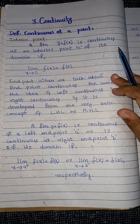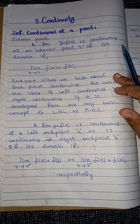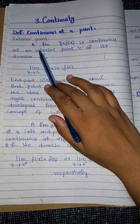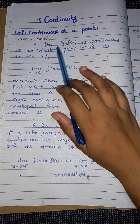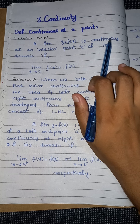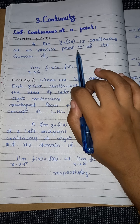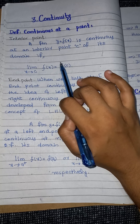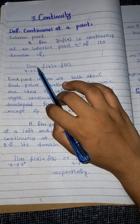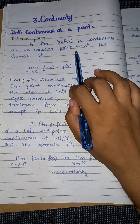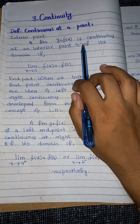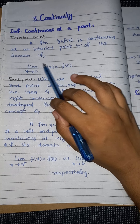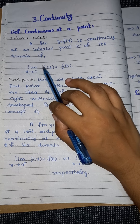In the case of an interior point, the definition says that a function y = f(x) is continuous at an interior point c of its domain if the following condition holds: if we substitute that interior point c into the function, its answer must equal the limit.